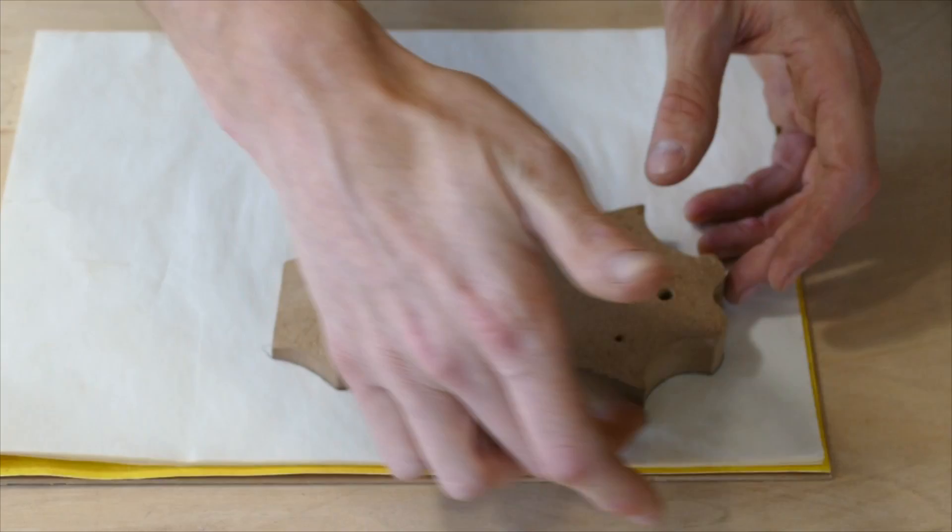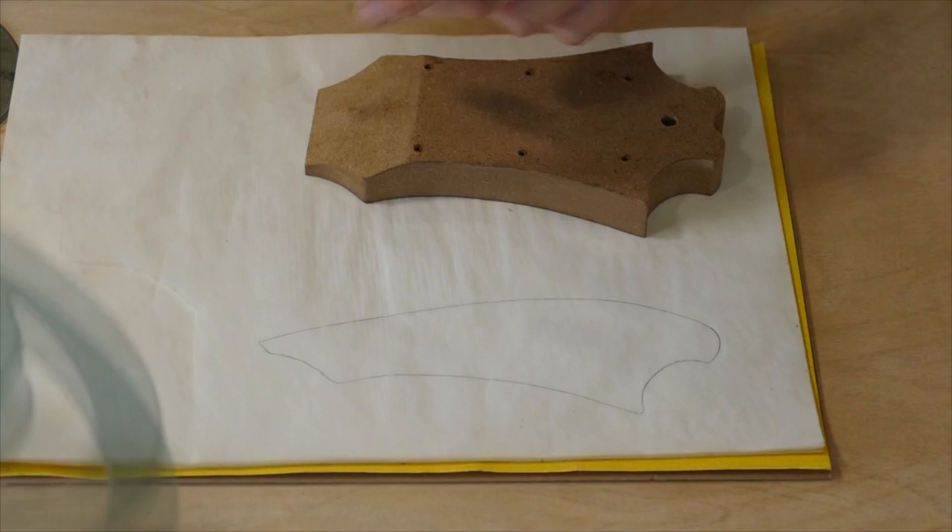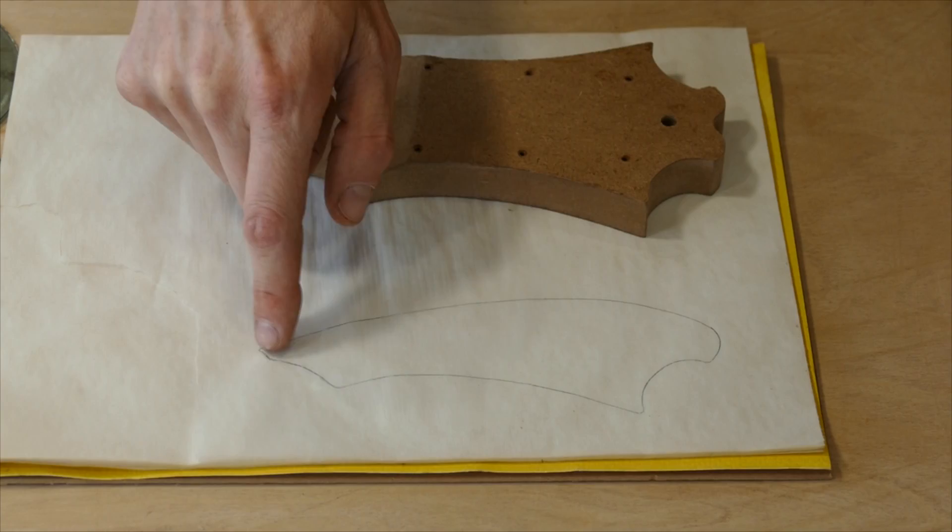So what I did was I traced this part of the headstock and you can see that's exact to this half of the headstock, and then I simply took a French curve and connected these lines with the French curve and just added this little attractive angle here at the end.